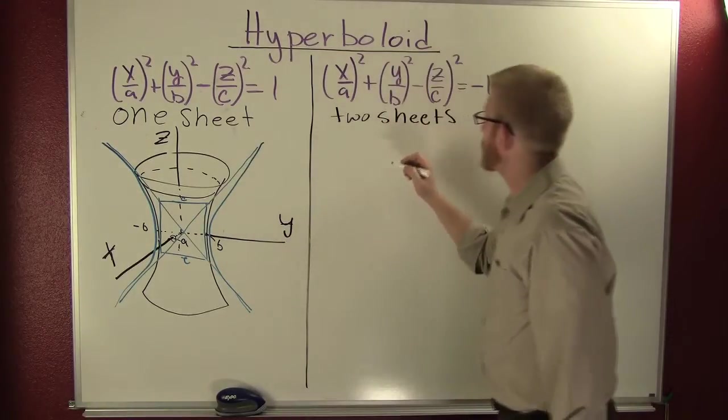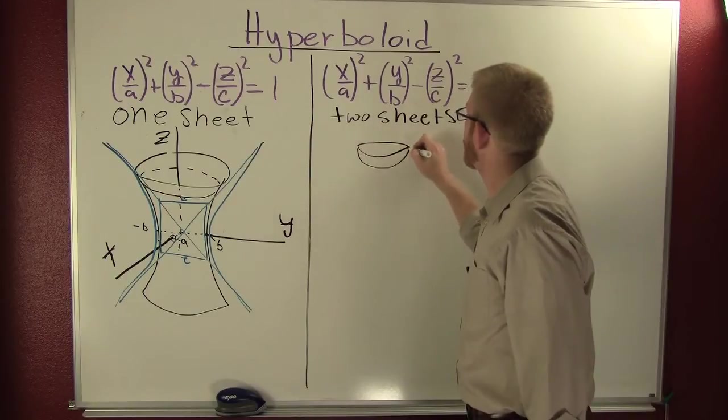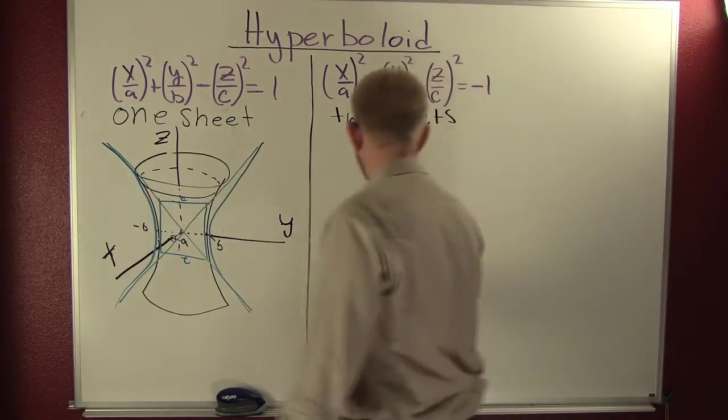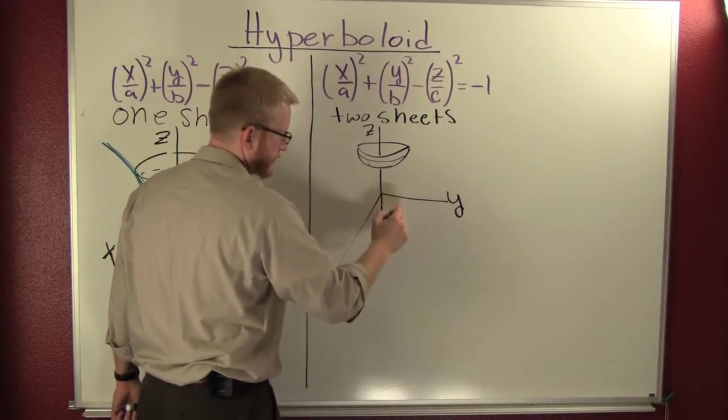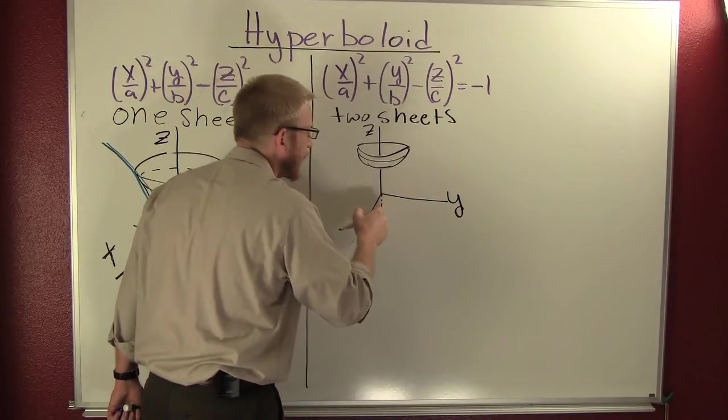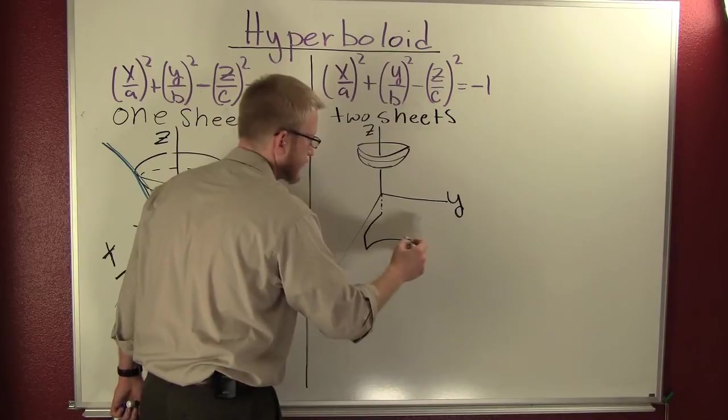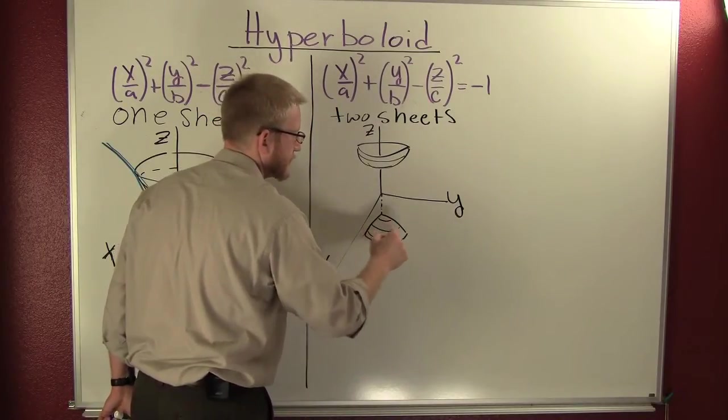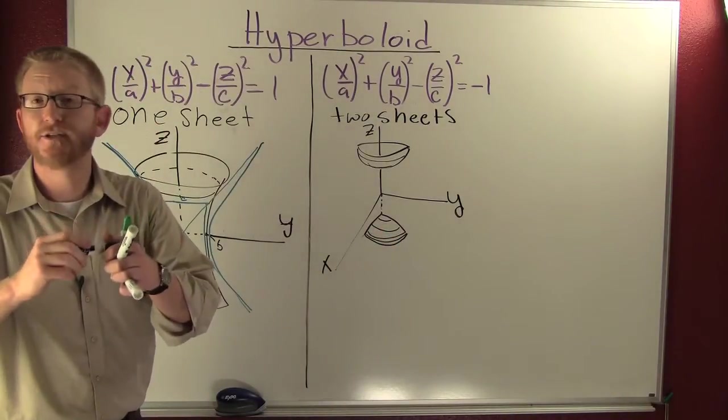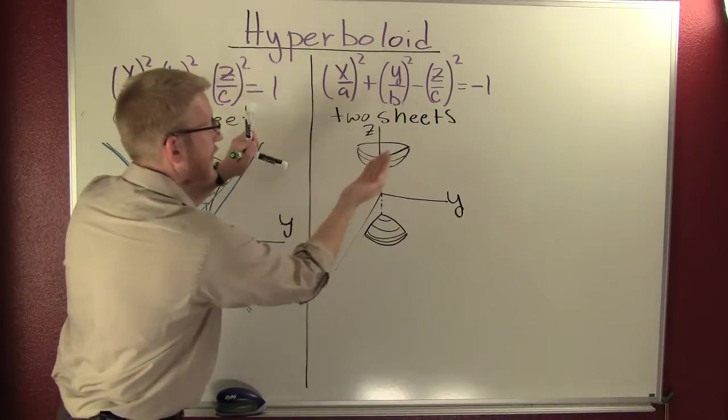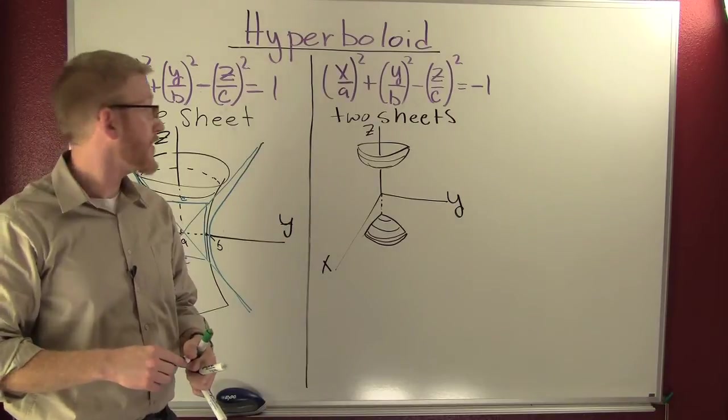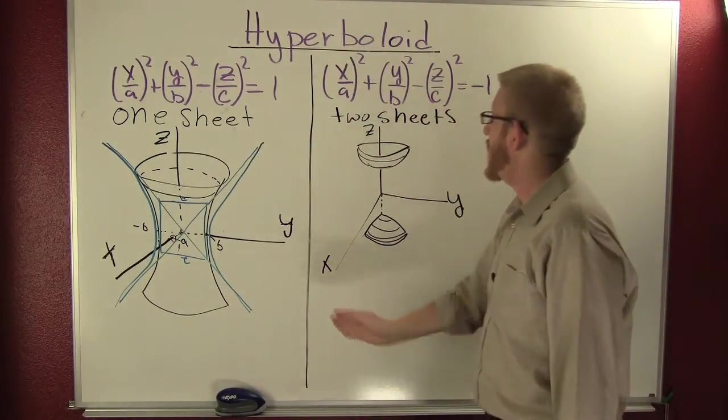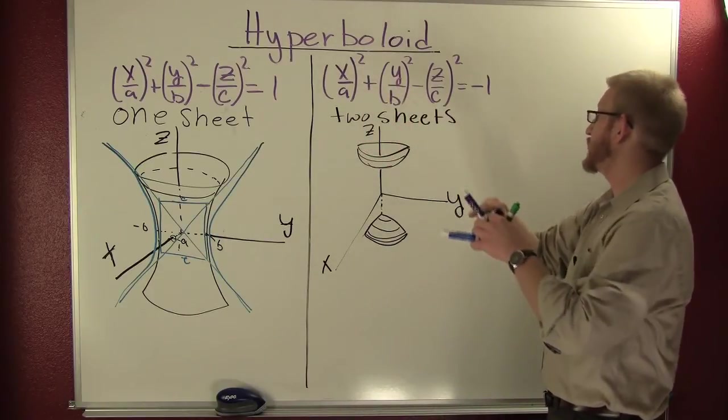Hyperboloid of two sheets. Okay, let's go ahead and draw this guy. Once again, in your traces that are parallel to the XY axis, you get ellipses. You also get hyperbolas in your XZ axis or plane and your YZ plane.